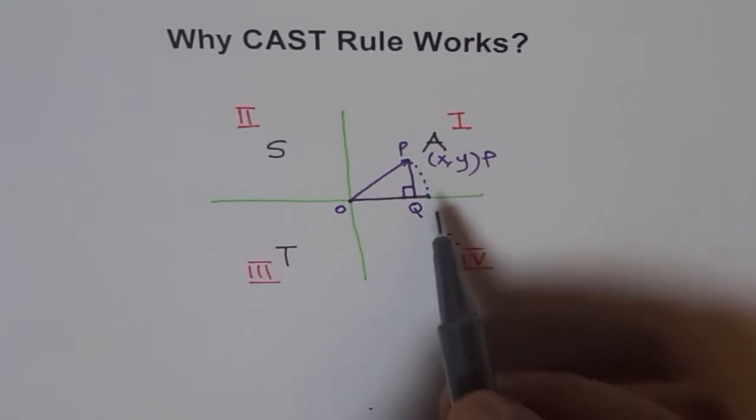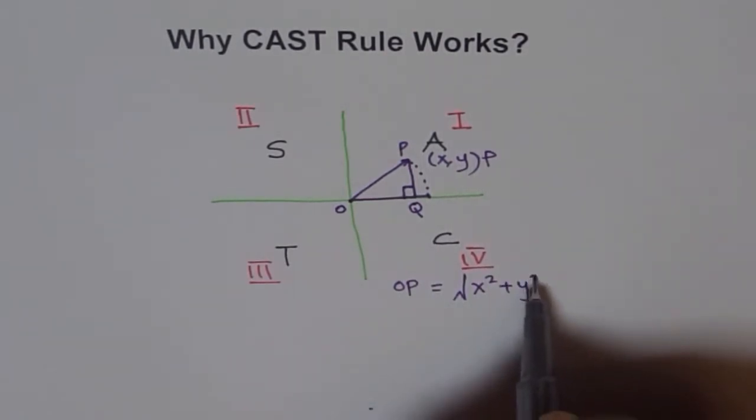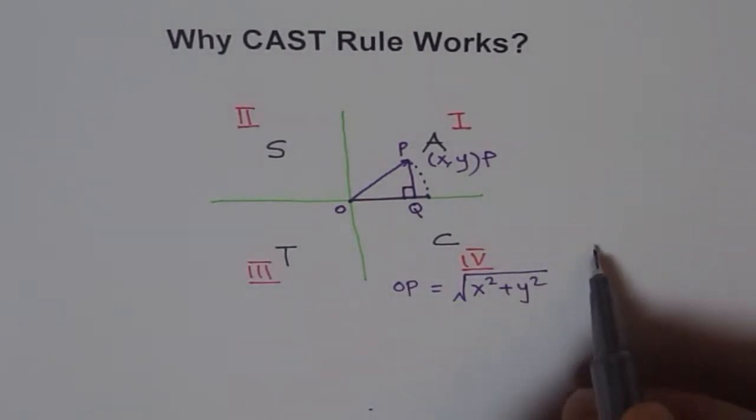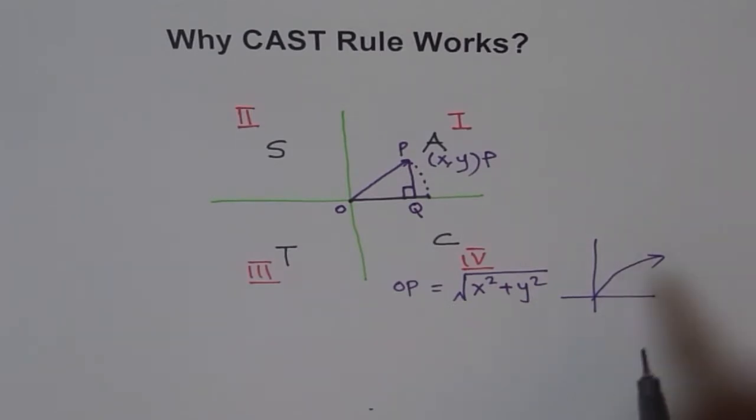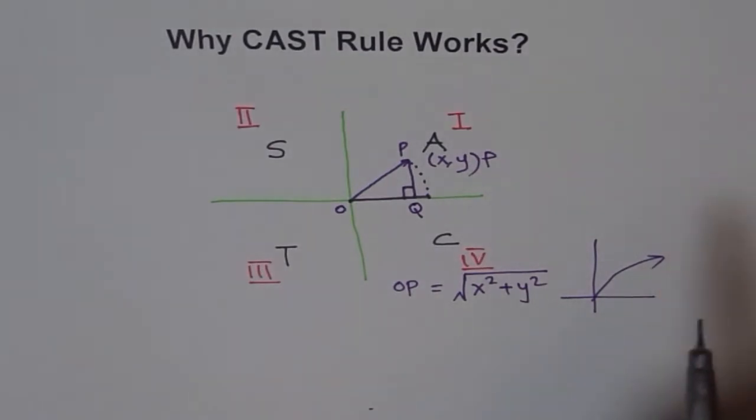Now in this triangle, x is OQ and y is PQ, correct? So along the x-axis we have x and parallel to y-axis we will have a y-coordinate. OP is what? OP can be written as, which is our hypotenuse, right? It can be written as square root of x squared plus y squared. As you know, square root is always positive. Square root function is always positive.